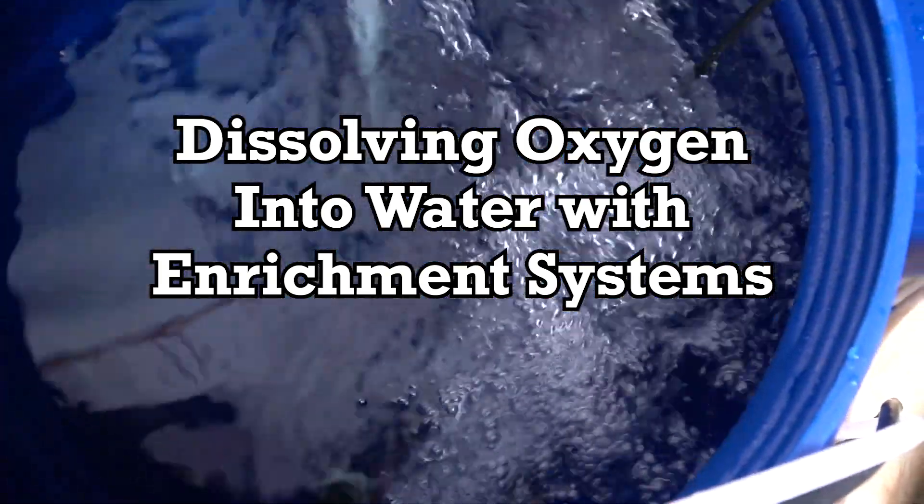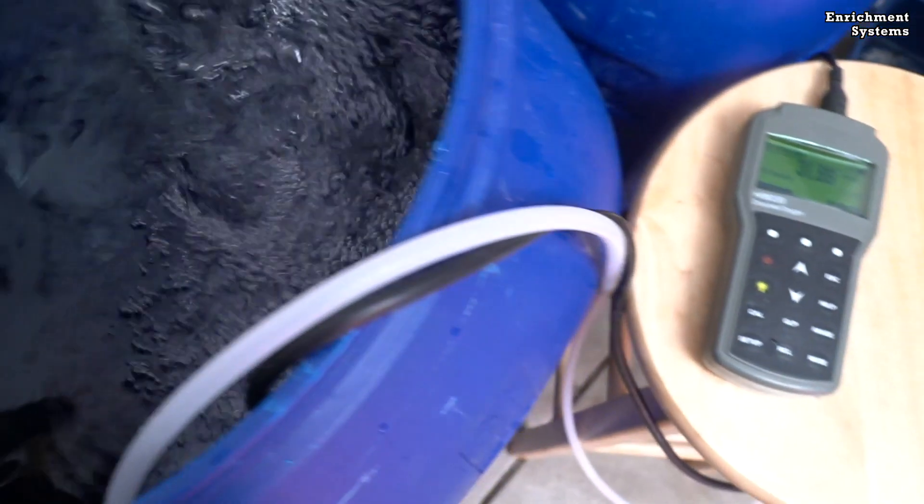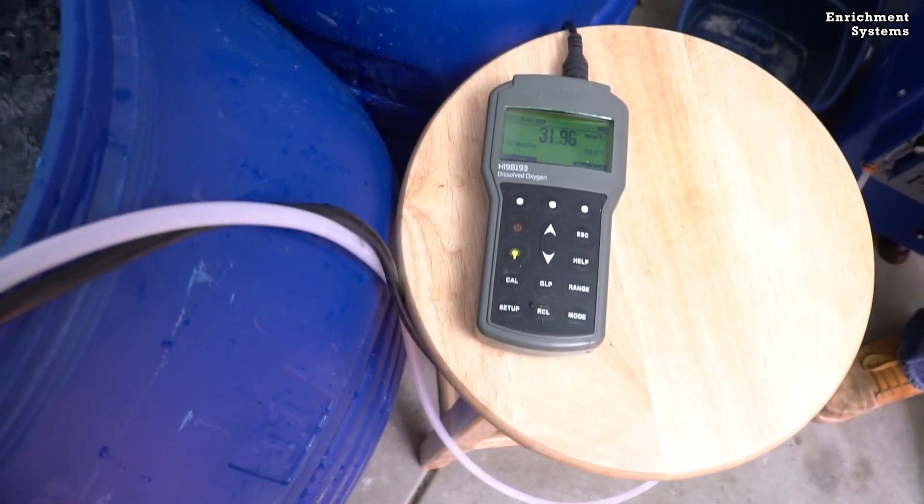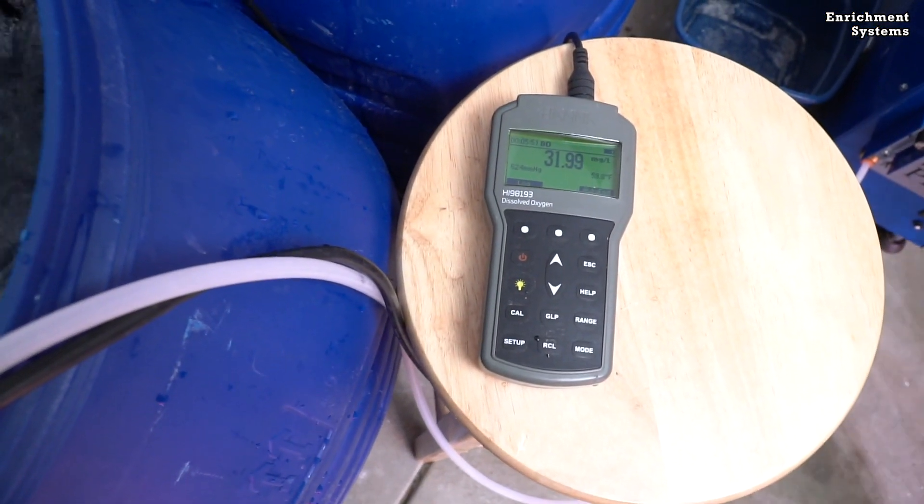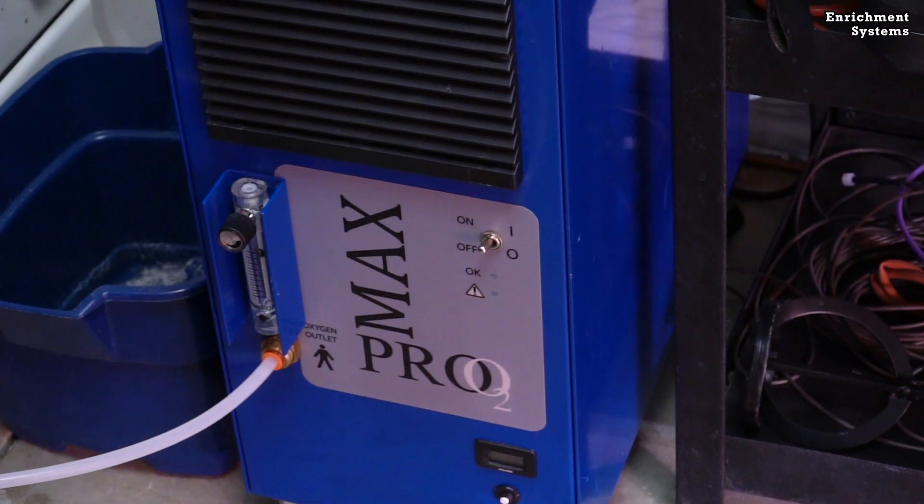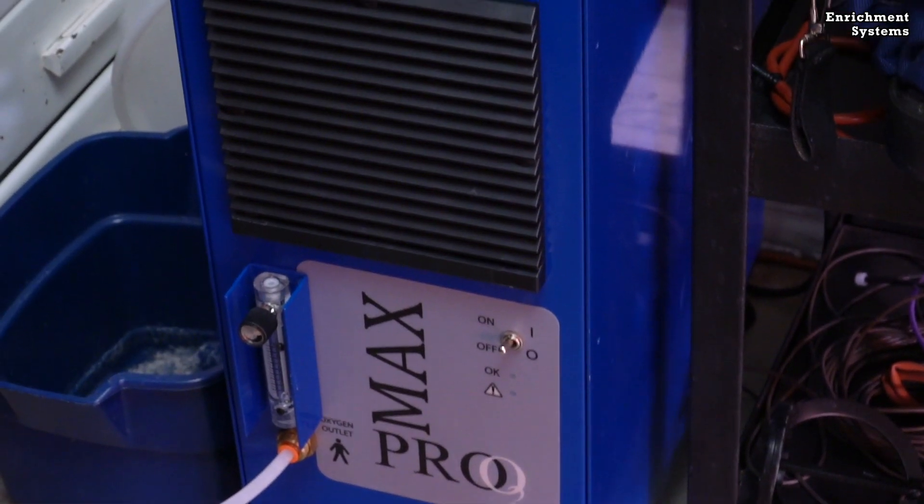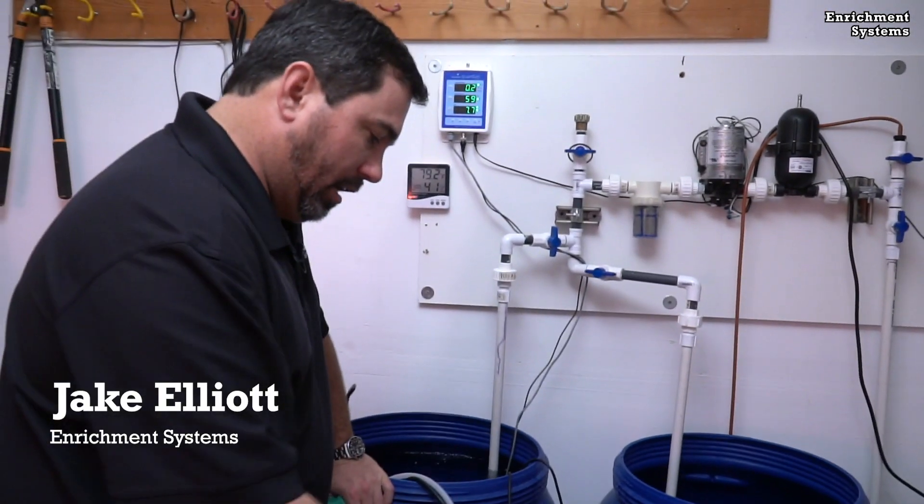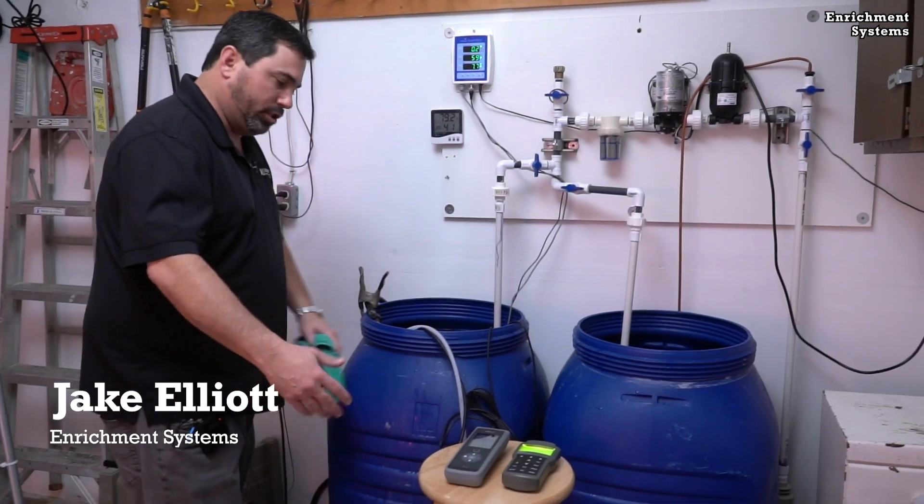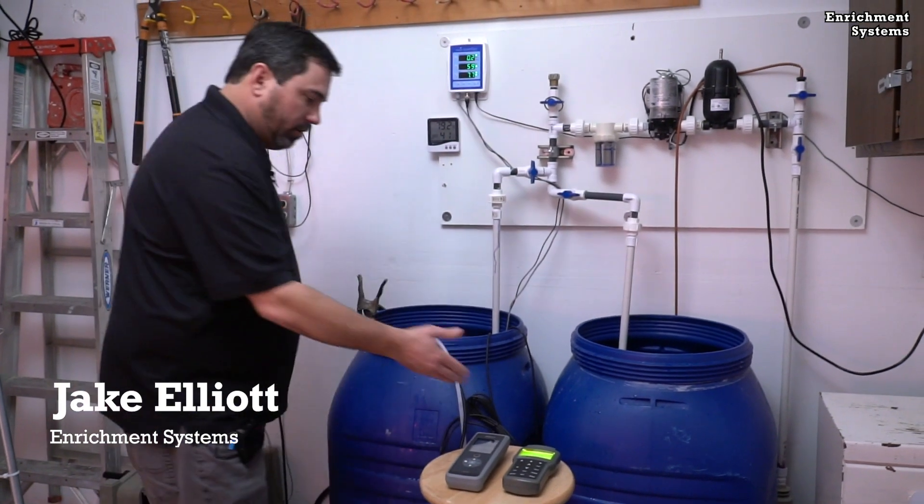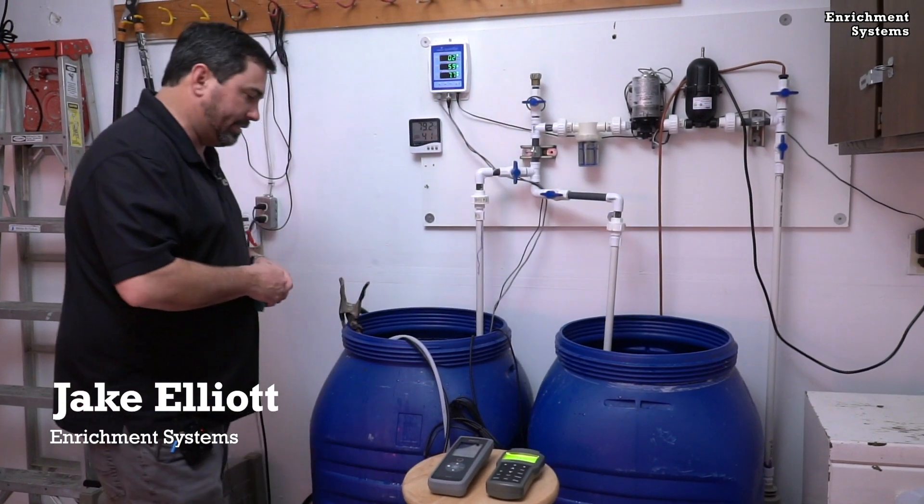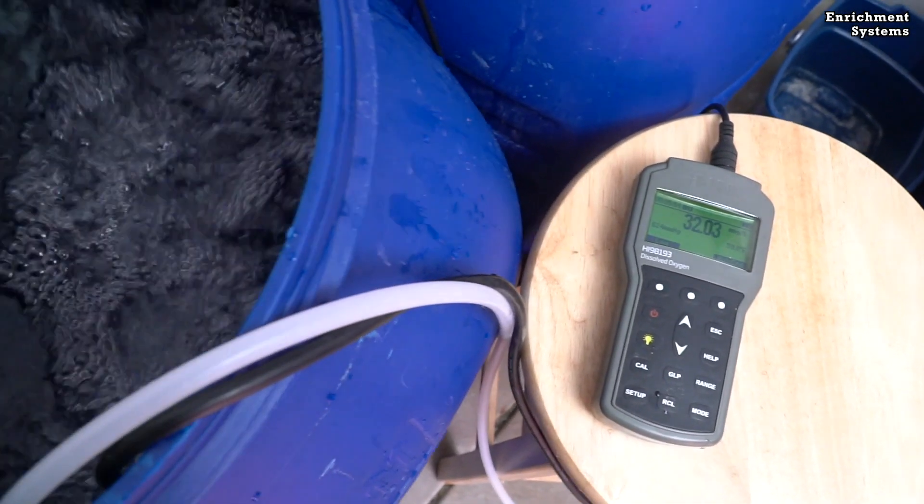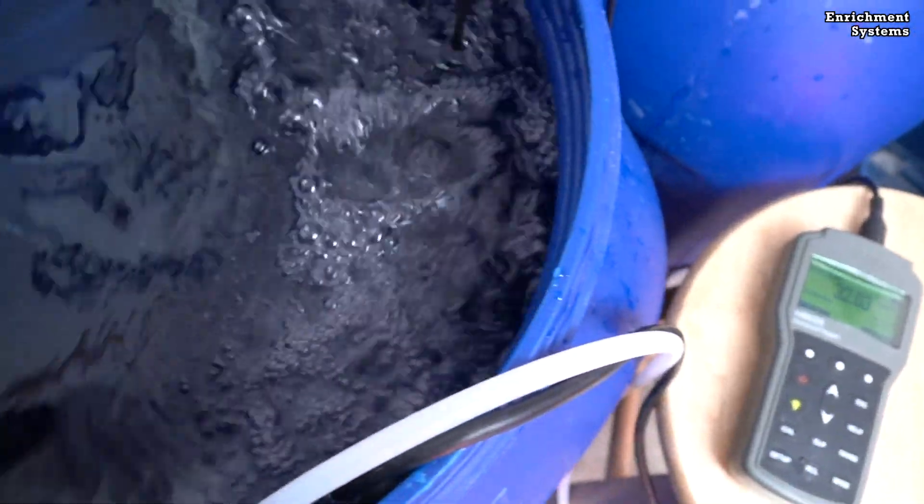We're just watching the actual level of DO increase. We filled up a 65-gallon container reservoir here to the top before we turned on any of the equipment, and now we're just watching the levels of DO increase as it's circulating through the system here. We're at almost 38, 37 and a half.